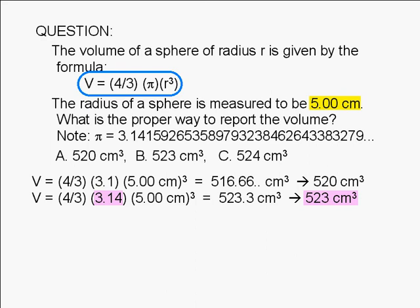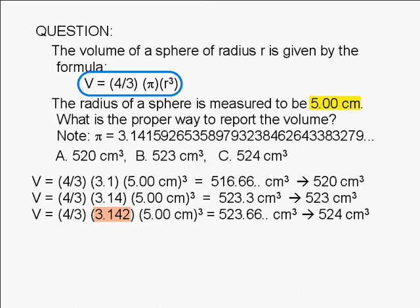Here's what we get if we use four significant digits for pi. Our answer in this case turns out to be 524 cubic centimeters. What we find in this case is that using more than four significant digits does not change our final answer.